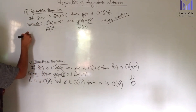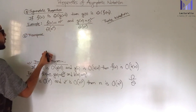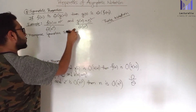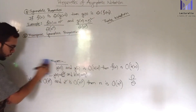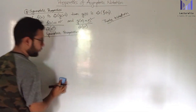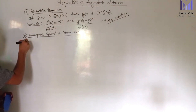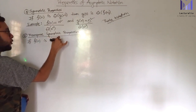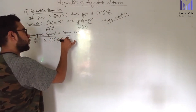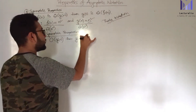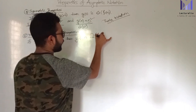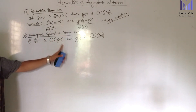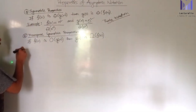Next, fiber chair transpose symmetric properties. If f of n is Big-O of g of n, then g of n is Omega of f of n. This is what the transpose symmetric property states - if f of n is Big-O of g of n, then g of n will be Omega of f of n. Just for example.